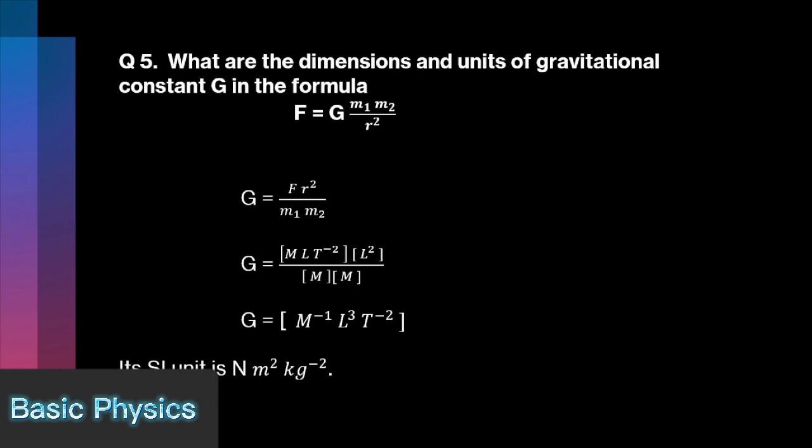Put the dimensions of force, radius and masses. Gravitational constant G has dimensions of [M^-1 L^3 T^-2]. Its SI unit is newton meter square per kilogram square.